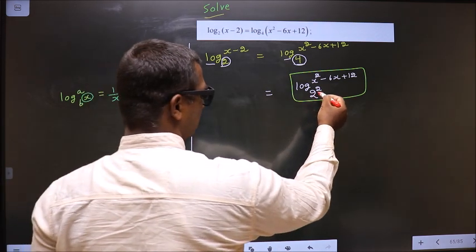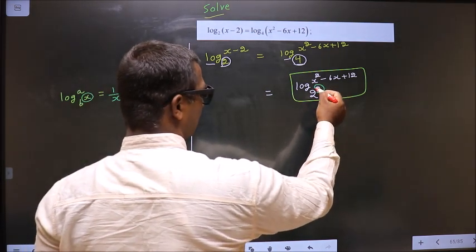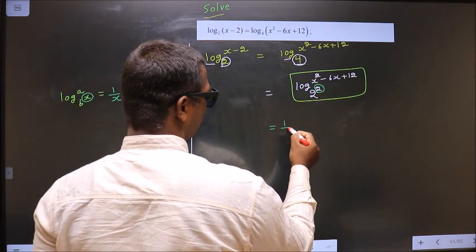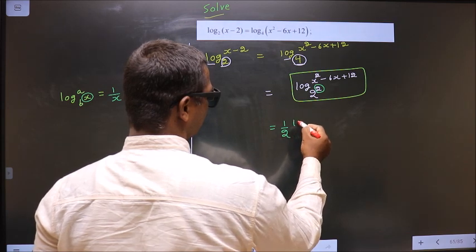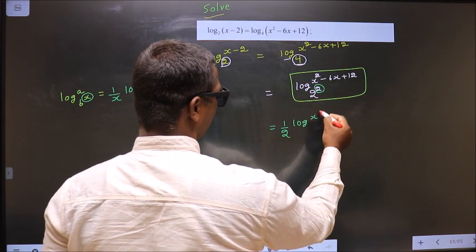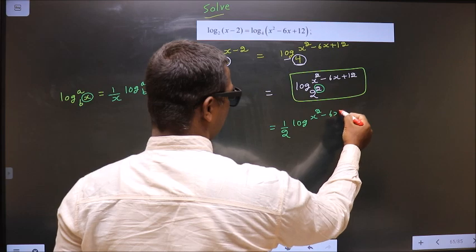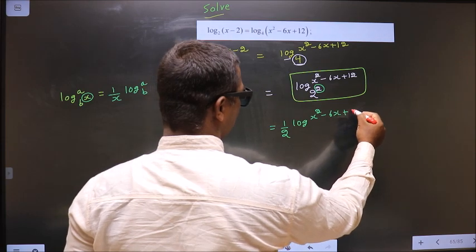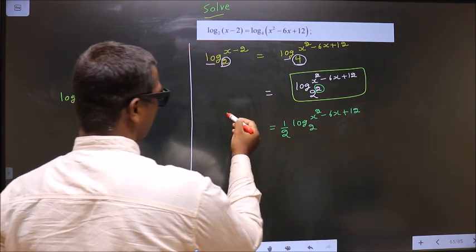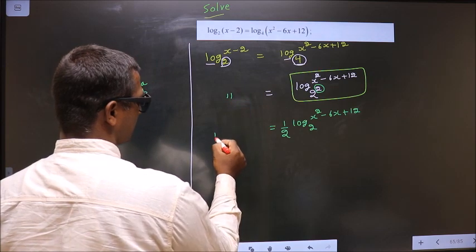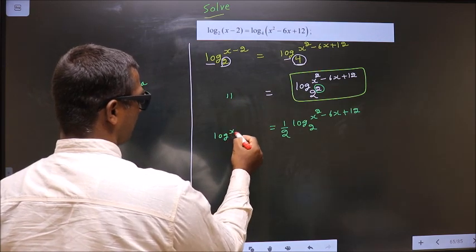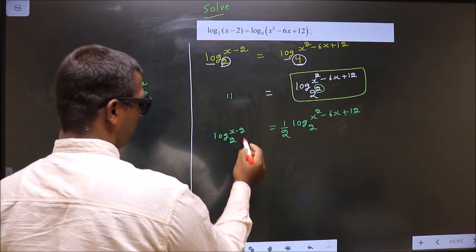Here the base has got the power 2, so it will come into the denominator, making it (1/2) log(x squared minus 6x plus 12) base 2. On the left side there is no change: log(x minus 2) base 2.